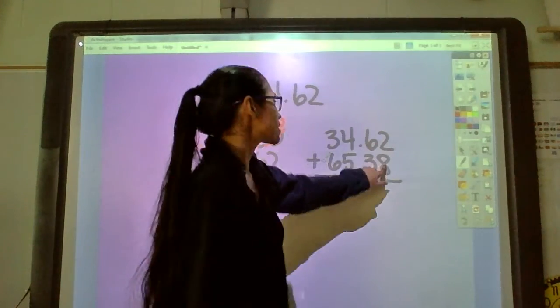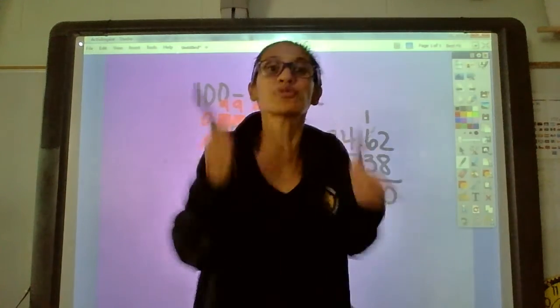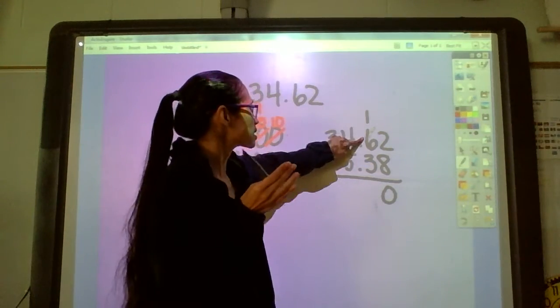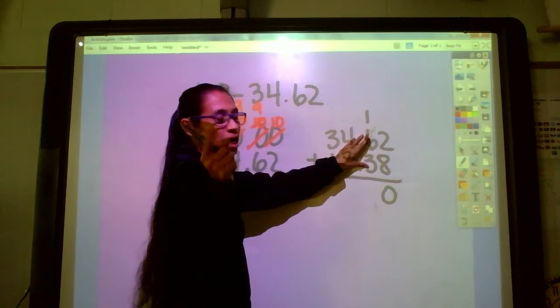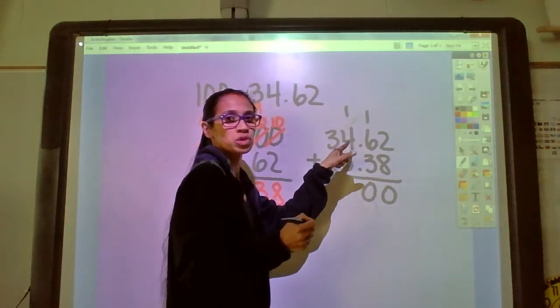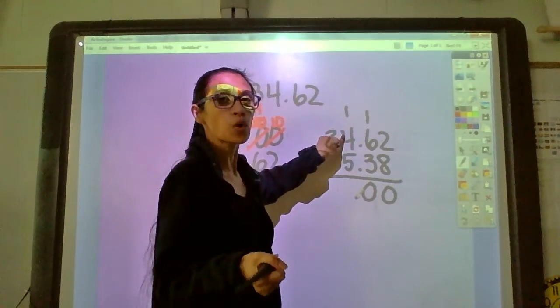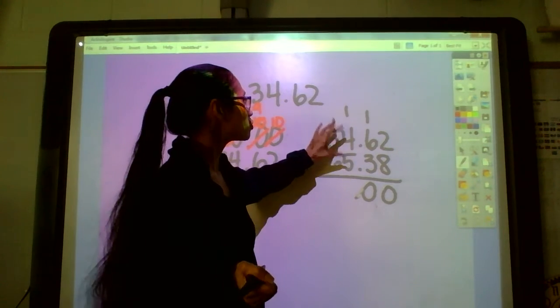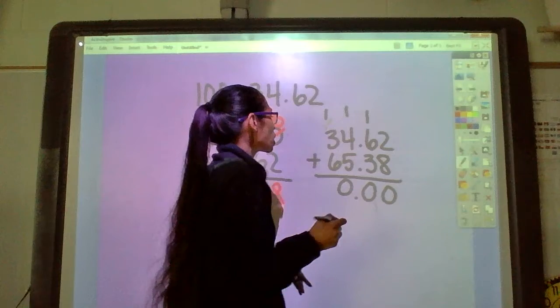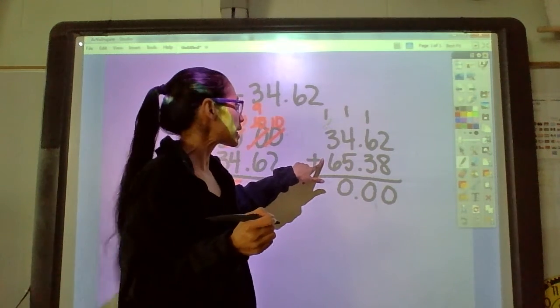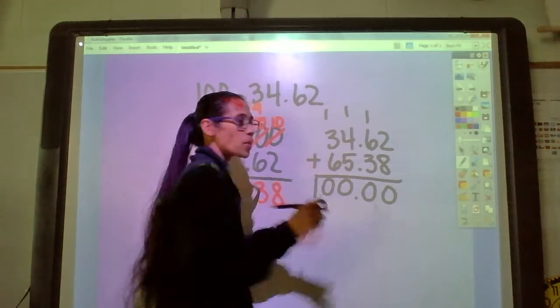We're going to try that again. 2 plus 8 is 10, write the 0, carry the 1. Now they're lined up straight, I'm not going to be confused. 1 plus 6 is 7 plus 3 is 10, or we can do 6 plus 3 is 9 plus 1 is 10. Write the 0, carry the 1, and the decimal down straight to the ground. 1 plus 4 is 5 plus 5 more is 10, or we can do 4 and 5 is 9 plus 1 more is 10. Bring that 1 up there. 1 plus 3 is 4 plus 6 is 10, or we can do 6 and 3 is 9 plus 1 more is 10. So write the 10 right there.